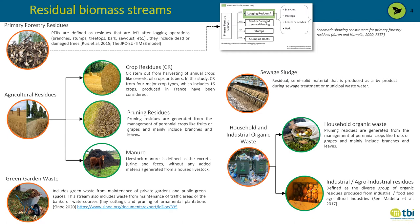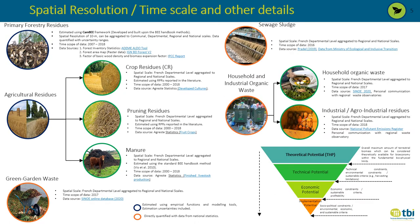Primary forestry residues are defined as the residues left after logging operations and include branches, stumps, treetops, bark, and such. This slide contains information on data sources, time scale, spatial resolution, and the potential estimated. I will not go into much detail as the slides will be shared publicly, but I will highlight some important aspects of our spatial database.